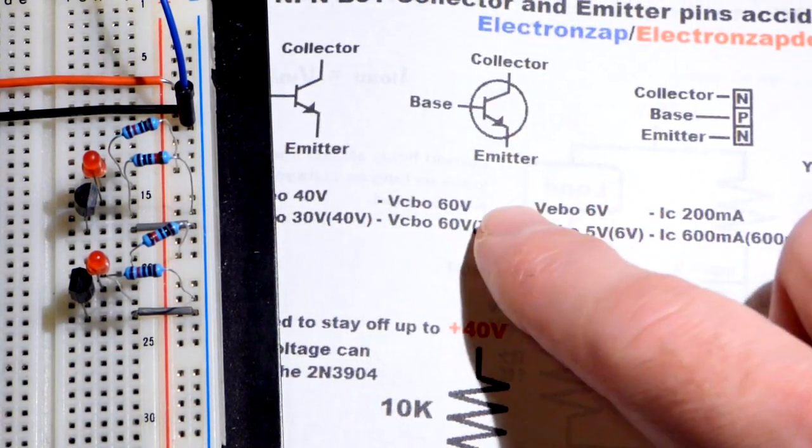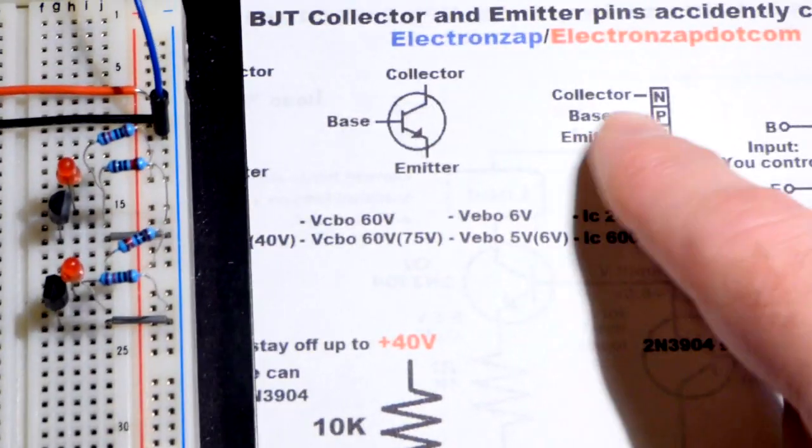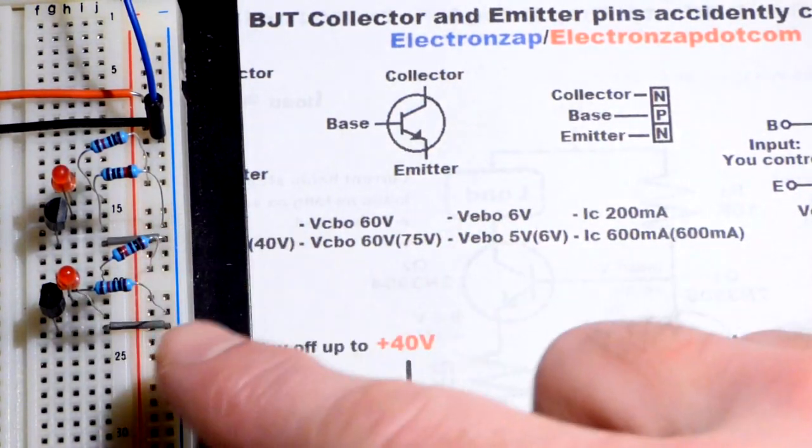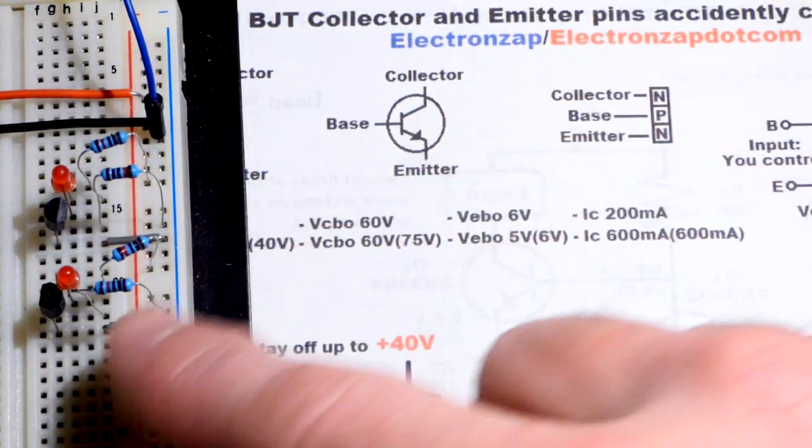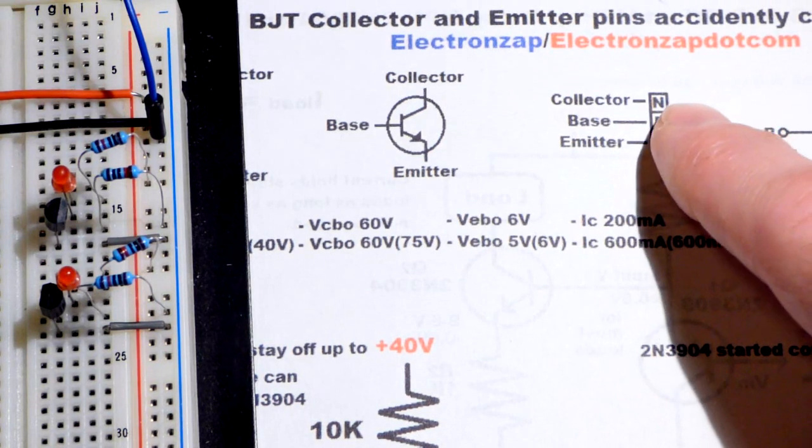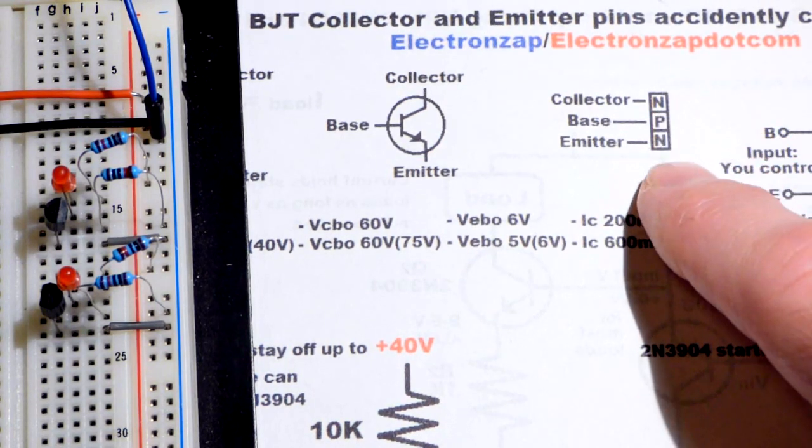So in any case, the collector-emitter, the collector, if you're using an NPN transistor, this is the 2N3904, the chemical makeup is NPN.